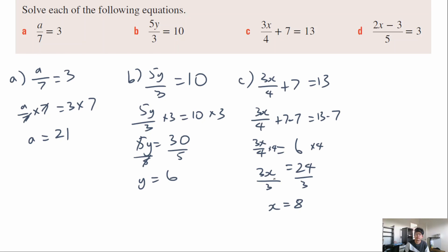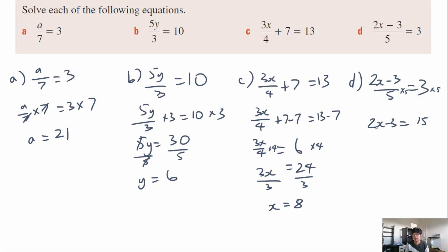Just a series of following steps there. Question d: (2x minus 3) over 5 equals 3. The 2x minus 3 are on the same level, so get rid of the 5 first by multiplying both sides by 5. That gives 2x minus 3 equals 15. Now add 3 to both sides: 2x equals 18. Finally divide both sides by 2, giving x equals 9.